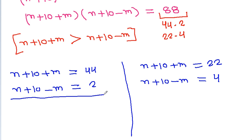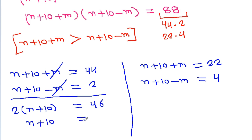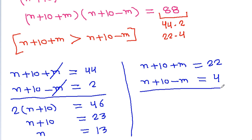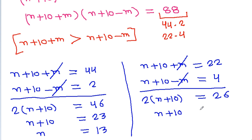For Case 1, adding both equations, m cancels and we get 2 times n plus 10 equals 46, so n plus 10 equals 23, giving n equals 13. For Case 2, adding both equations gives 2 times n plus 10 equals 26, so n plus 10 equals 13, giving n equals 3.